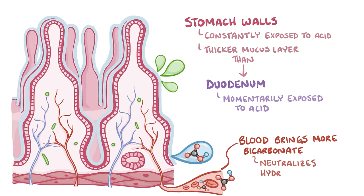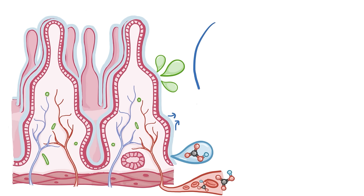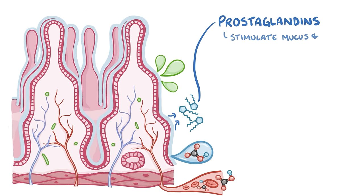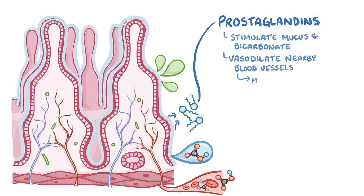Small signaling molecules called prostaglandins get secreted in the stomach and duodenum, and they stimulate mucus and bicarbonate secretion, as well as vasodilation of the nearby blood vessels, which allows more blood to flow to the area. This promotes new epithelial cell growth and also inhibits acid secretion.